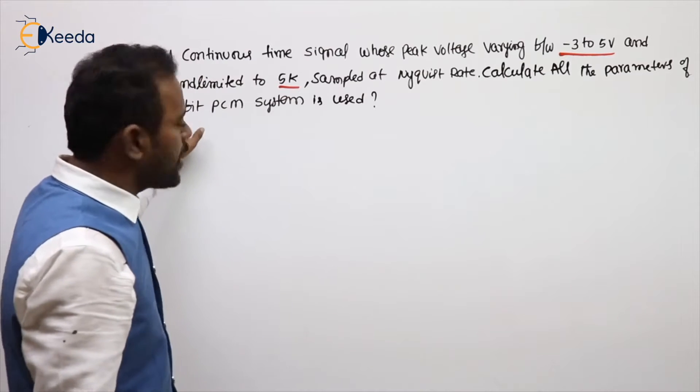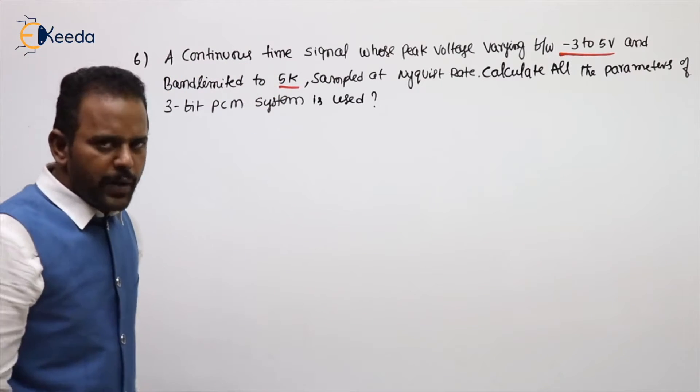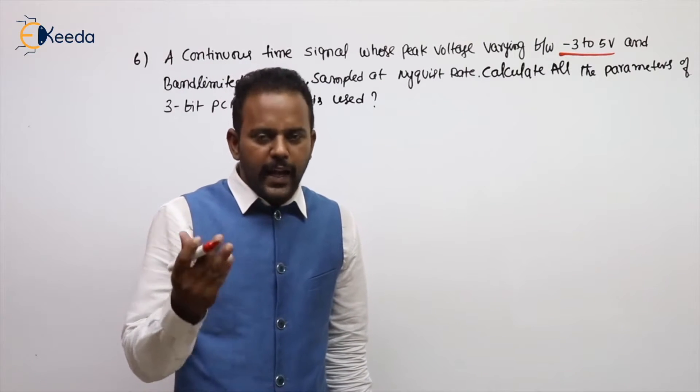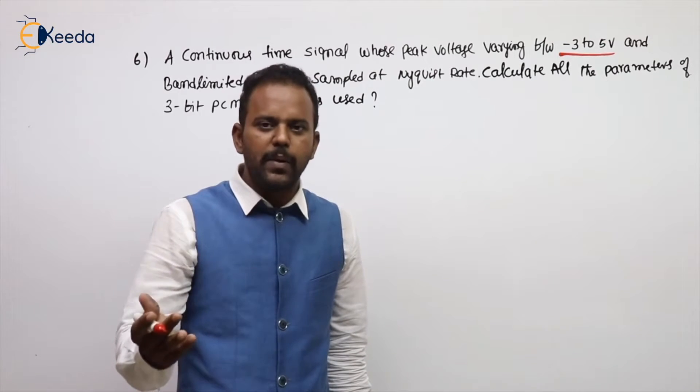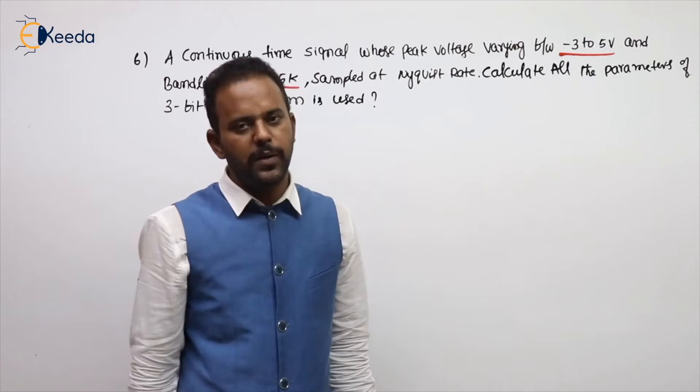Calculate all the parameters of a 3-bit PCM system is used. All parameters means what we calculated in the previous video like N, L, Delta, QE max, T, V, R, B, minimum and maximum transmission bandwidth.